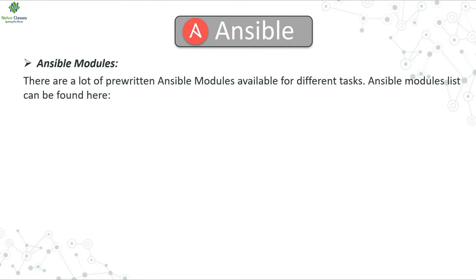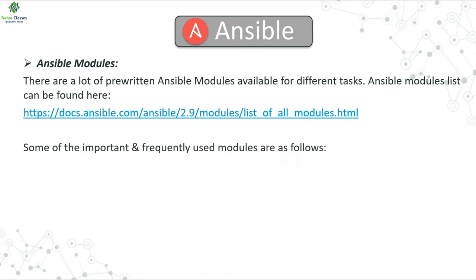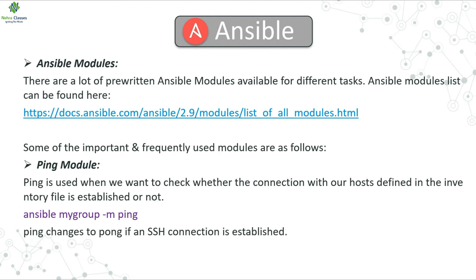Ansible modules can be found at the official Ansible documentation link, where you can see many modules available. We will discuss some of the most frequently used modules. The ping module checks connectivity with nodes or hosts — execute ansible [group_name] -m ping, optionally with -u [username] to run from a different account. In the output, ping changes to pong if an SSH connection is established.